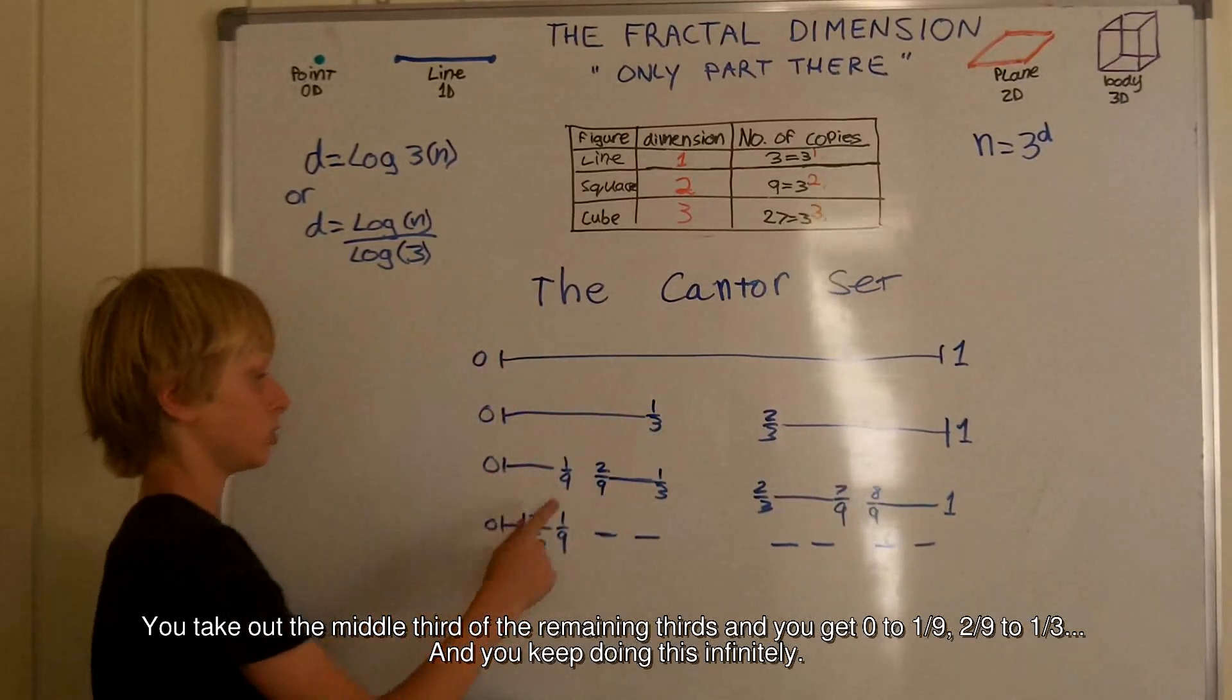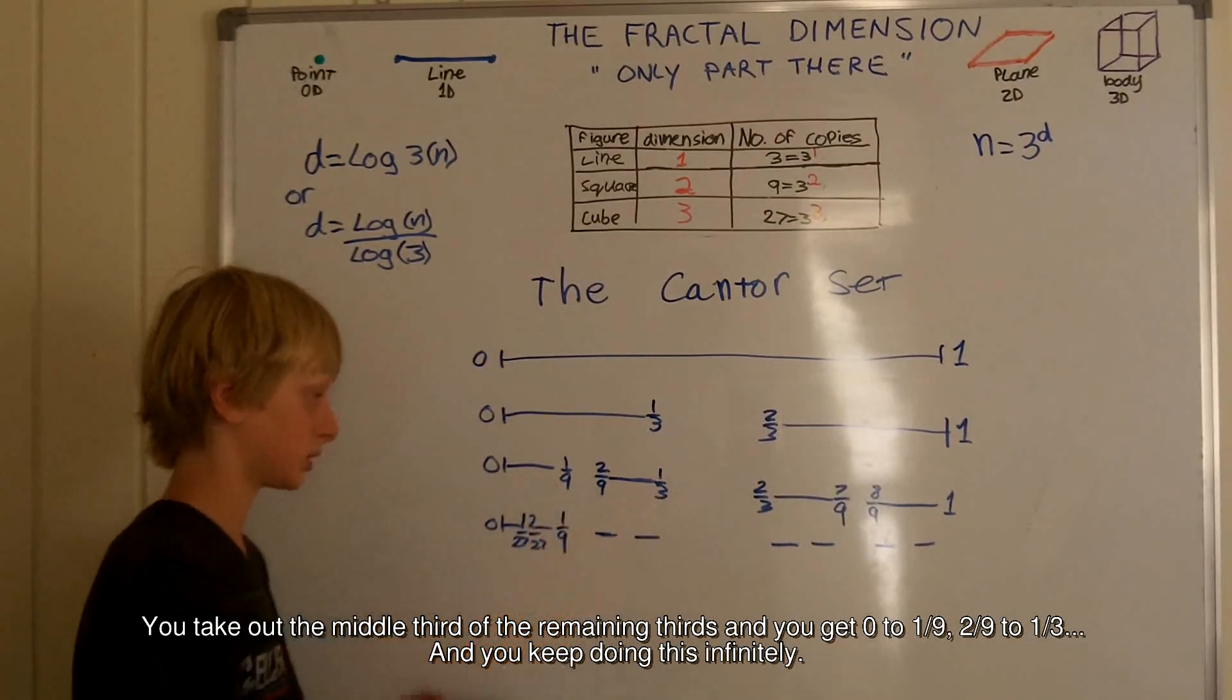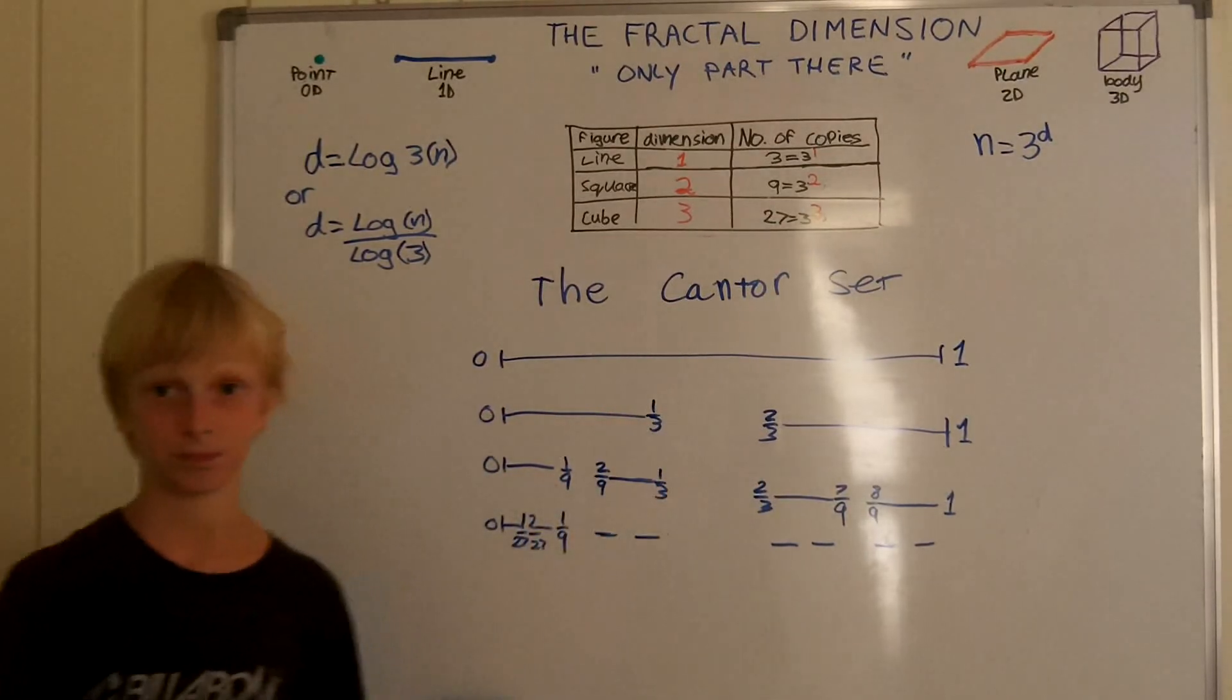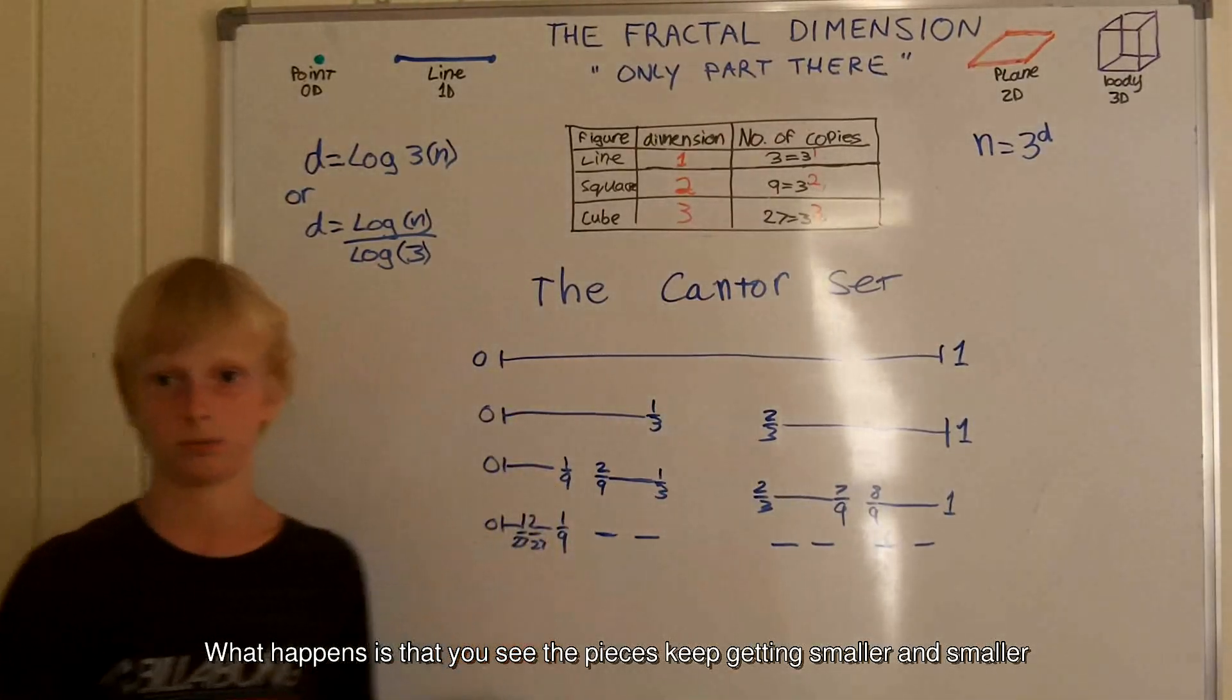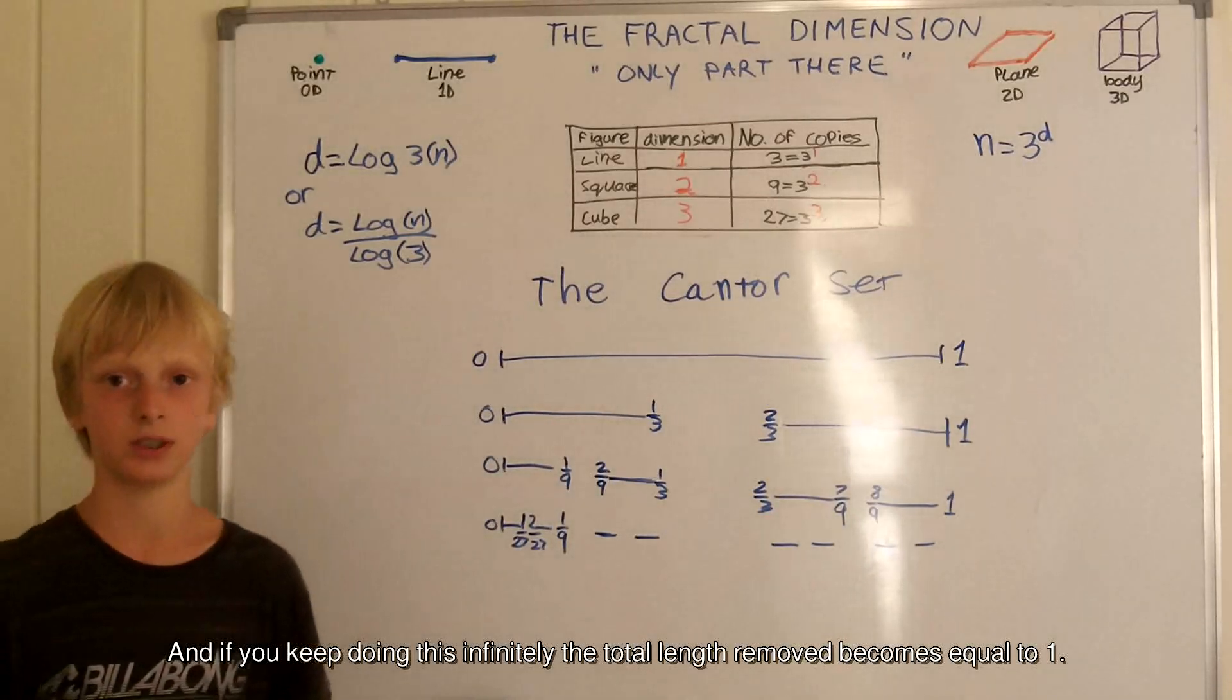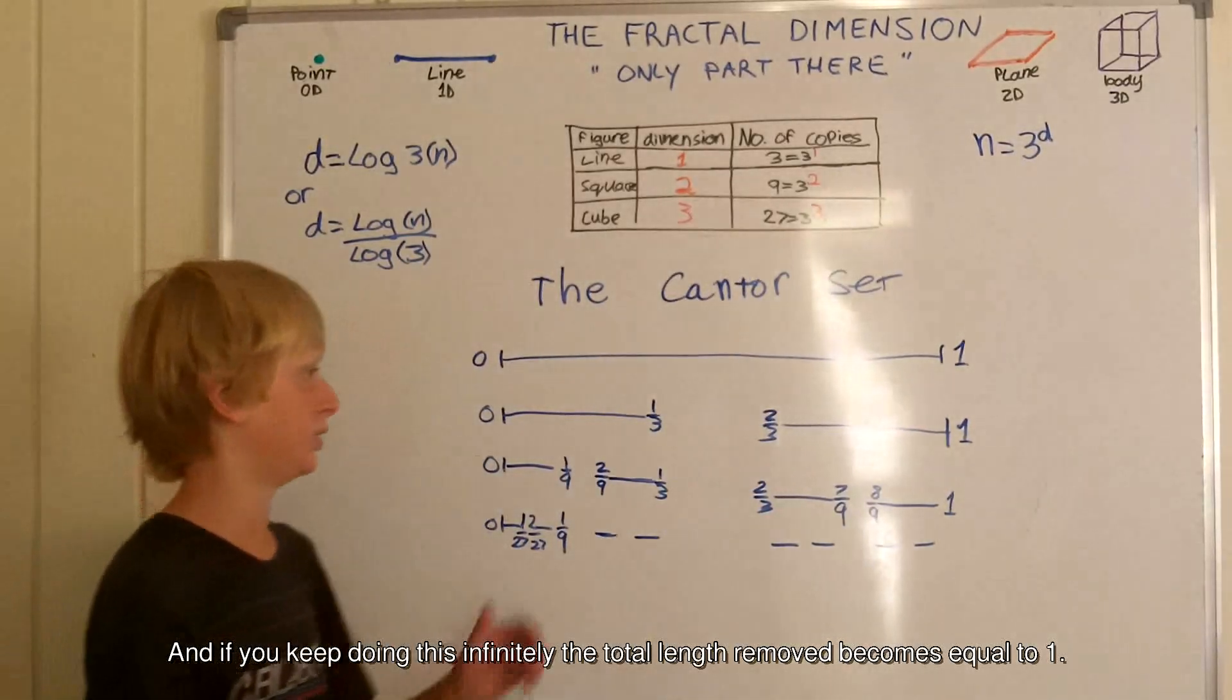You get 0 to 1 ninth, 2 ninth to 1 third, and keep doing this infinitely. What happens is that you see the pieces keep getting smaller and smaller. And if you keep doing this infinitely, the total length is removed and becomes equal to 1.